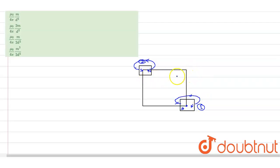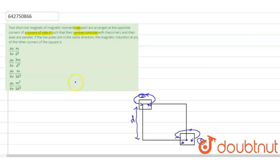And each side of this square, the distance between them is d. This distance is d. So to solve this question we have to find out the magnetic induction at any of the other corners of the square. So let's find the magnetic induction at this point.